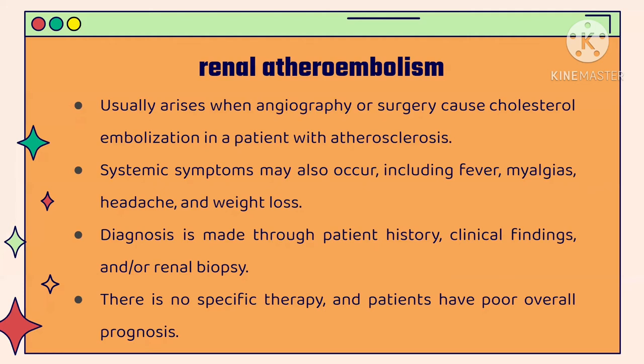The diagnosis of renal atheroembolism can be made through patient history, clinical findings, and renal biopsy. Renal biopsy is usually successful in detecting cholesterol emboli in the renal microvasculature, which are seen as needle-shaped clefts. There is no specific therapy for renal atheroembolism, and patients have a poor overall prognosis due to the associated burden of atherosclerotic vascular disease. However, there is partial improvement in renal function several months after onset of renal impairment.